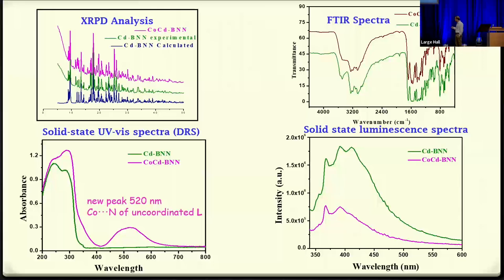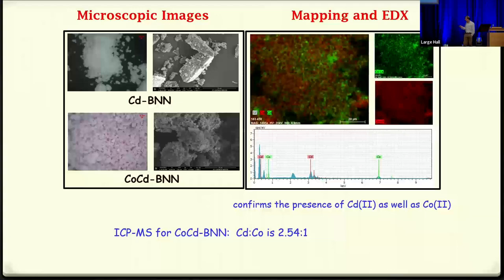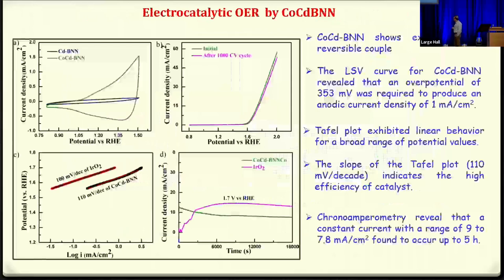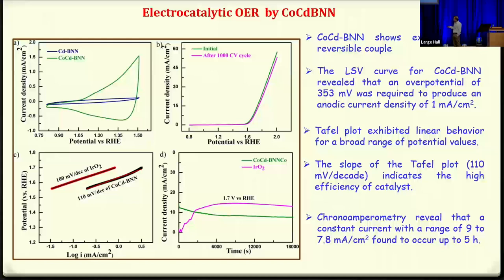In the electrochemical studies of CoCd-BNN, CoCd-BNN is very active while CdBNN is not redox-active. CoCd-BNN gives current at a potential of about 1.54–1.6 V, and the same current is observed even after 1000 cycles. The reaction kinetics are as good as the benchmark catalyst IrO2 from the Tafel slope, and chronoamperometric studies show constant current generation up to 18,000 seconds.